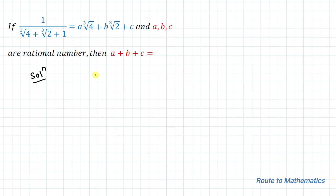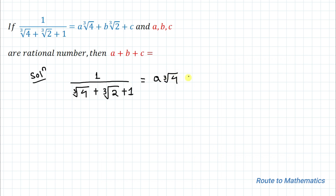The given equation is 1 divided by cube root of 4 plus cube root of 2 plus 1, equals a multiplied with cube root of 4 plus b multiplied with cube root of 2 plus c.